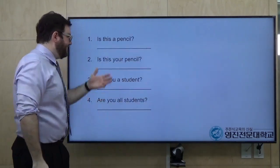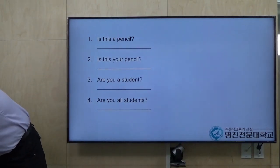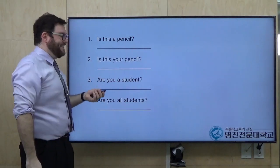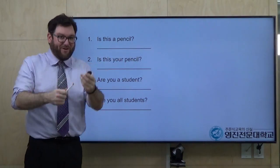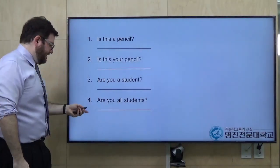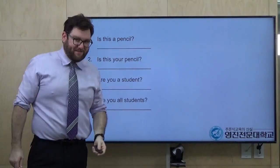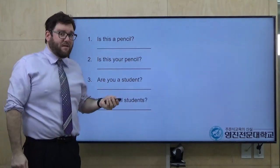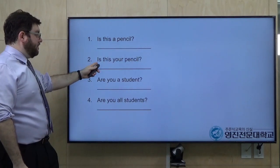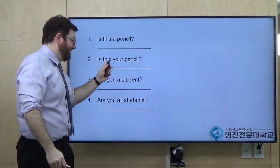So let's practice. Here are some questions. Number one: is this a pencil? — let me get a pencil. It's a pen, but let's pretend it's a pencil. Is this a pencil? Number two: is this your pencil? So you can answer. Number three: are you a student? And number four: are you all students?